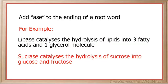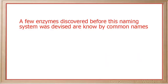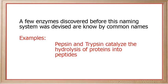Sucrase catalyzes the hydrolysis of sucrose into glucose and fructose. A few enzymes discovered before this naming system was devised are known by common names, and some examples of these are pepsin and trypsin, which catalyze the hydrolysis of proteins into peptides.